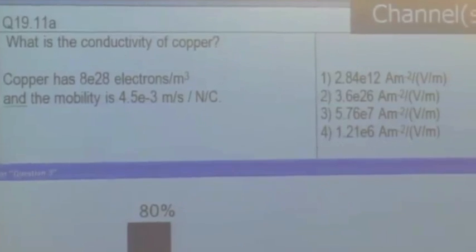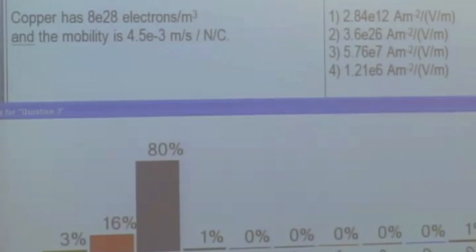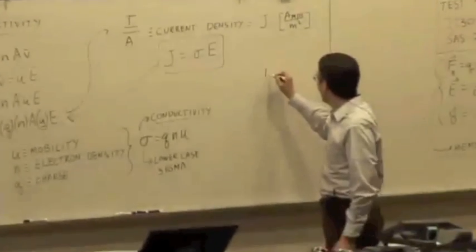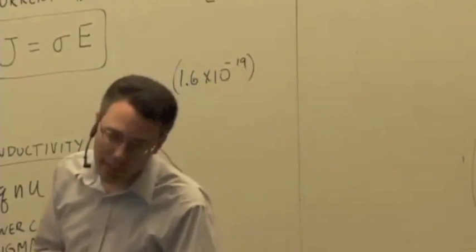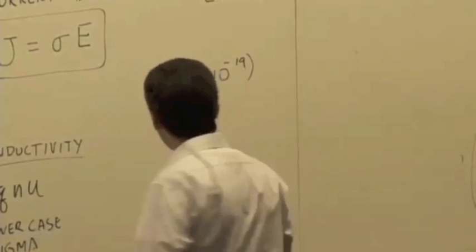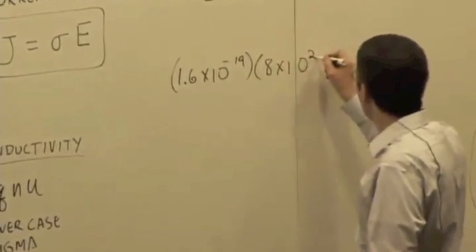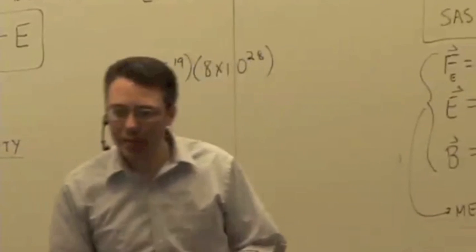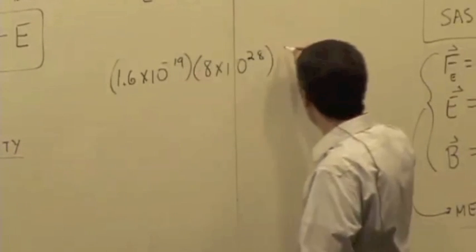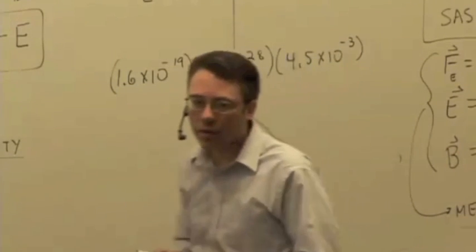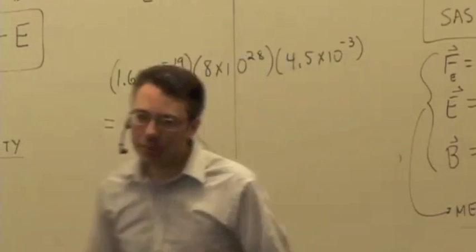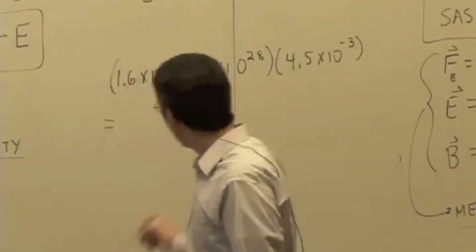Answer number three, 5.76 times 10 to the 7. What's the charge we're multiplying by? Yeah, the charge of an electron, because we know that the mobile charges in copper are electrons. So it's 1.6 times 10 to the minus 19 times, the N is 8 times 10 to the 28th, and the mobility is 4.5 times 10 to the minus 3. And so that should give you 5.76 times 10 to the 7.